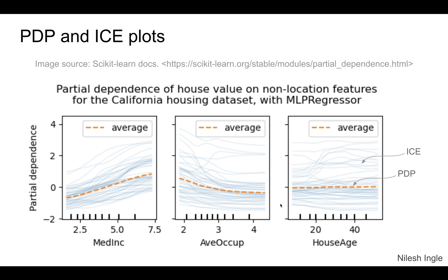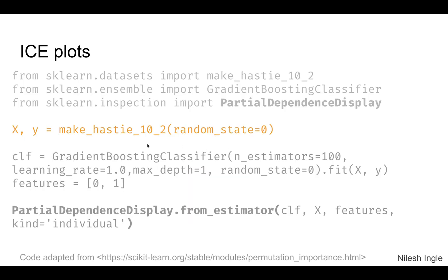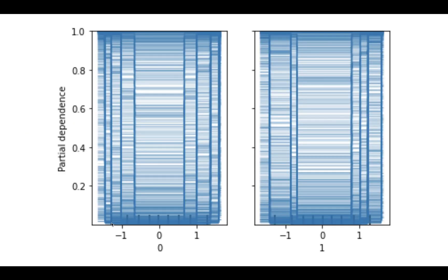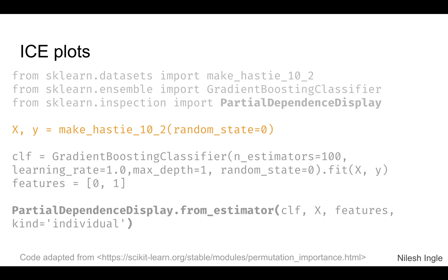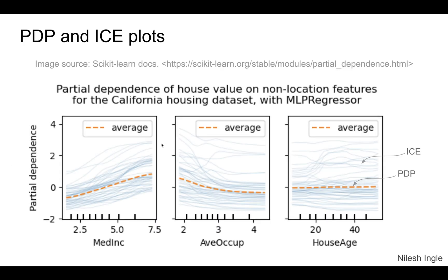Here is the code snippet for ICE plots, again copied from the docs. We use PartialDependenceDisplay.from_estimator with the estimator, X, features, and kind='individual'. This is the plot we get. This particular example may not look very meaningful because it uses a generated dataset, but when working with a good dataset you should be able to see clear individual lines for each of the features.